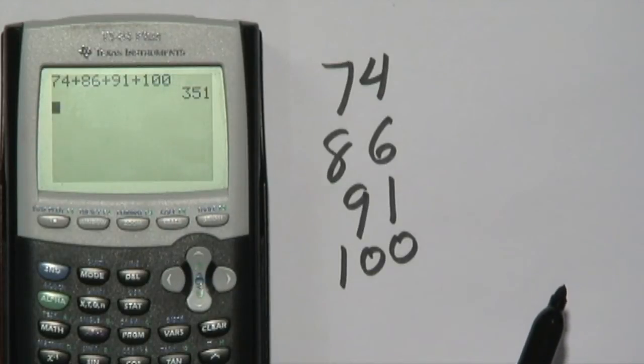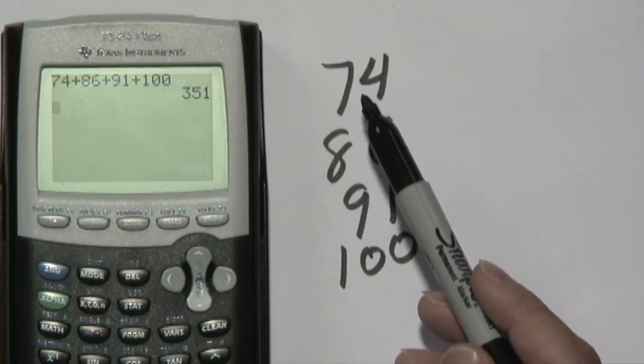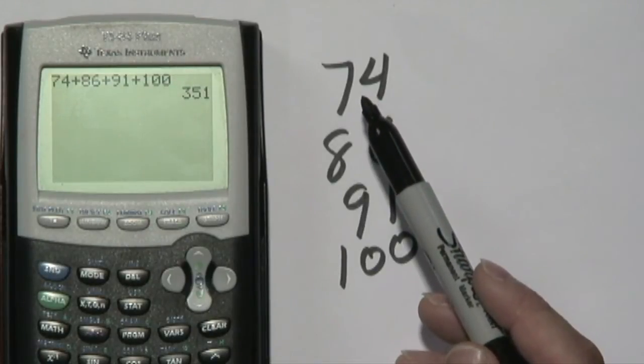And you have, in this case, the four numbers give you 351. Now that means the first process of finding the mean is literally add them together.